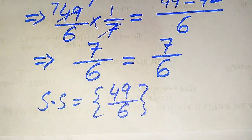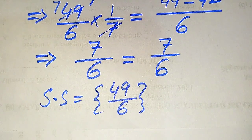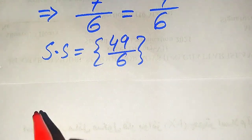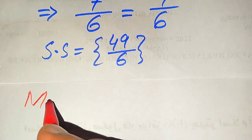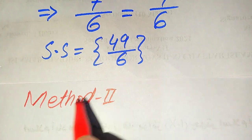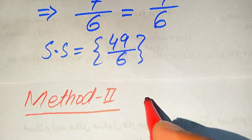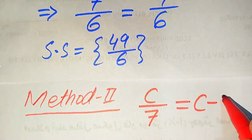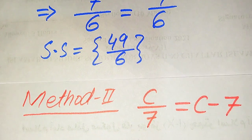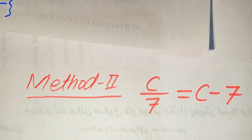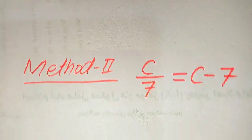The solution set from Method 1 is {49/6}. Now we solve the problem again using Method 2. We copy down the given equation: C divided by 7 equals C minus 7.